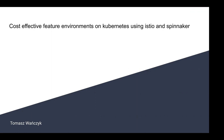Today I'm going to talk about a topic titled 'Cost of Turn Environments on Kubernetes using Istio and Spinnaker.' I will explain what that is, what issues I met during the implementation phase, and what benefits we have from it.